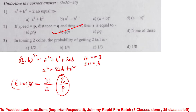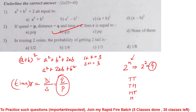Next question: In tossing two coins, the probability of getting two tails. The total sample space is 2 to the power 2, that is 4. The sample spaces are TT, HT, TH, and HH. Two tails gives one favorable outcome out of 4, so 1 by 4 is the correct answer.